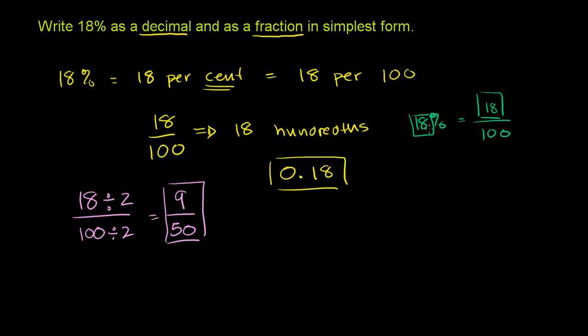And another way to think about it, you could view this as 18.0%. So this is 18.0%. When you want to convert this, I just added a trailing 0 there so that you see the decimal really...